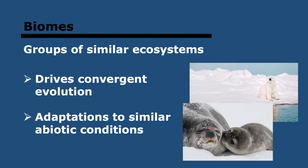For example, two organisms from different evolutionary origins both have a lot of adipose tissue to maintain heat because they live in a very similar environment. That's a good example of how plants and animals from different evolutionary origins adapt similar functions to live in the same habitat.